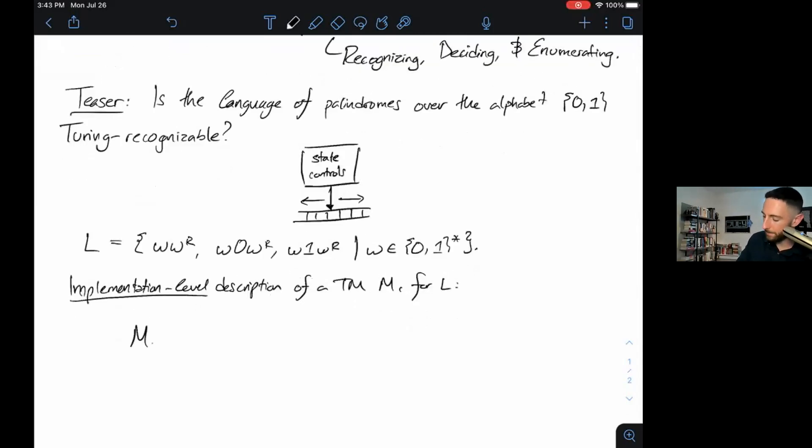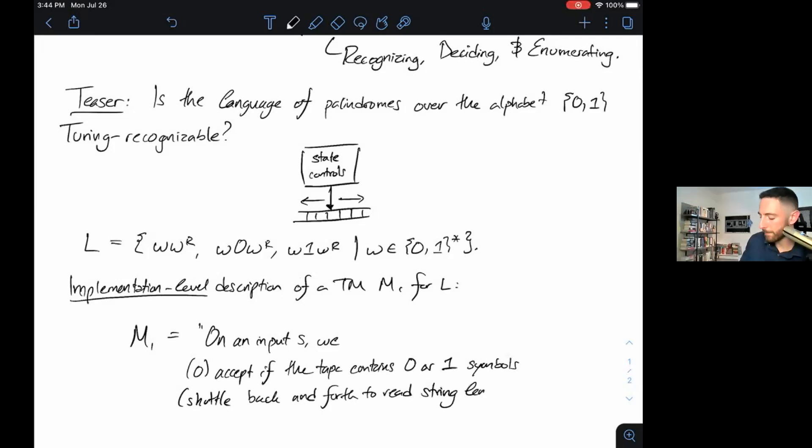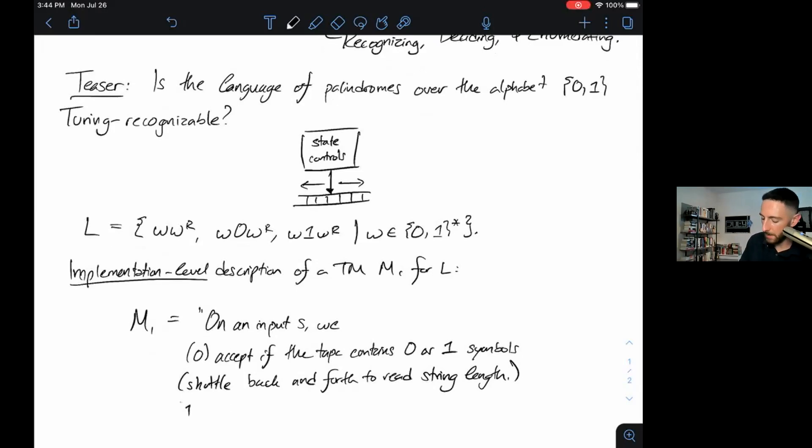M1 looks like the following. On an input S, we accept if the tape contains 0 or 1 symbols. To do this, we can just shuttle back and forth to read string length. If our tape has just one symbol or no symbols, then it's clearly a palindrome. That'll be our preliminary check, our step 0.